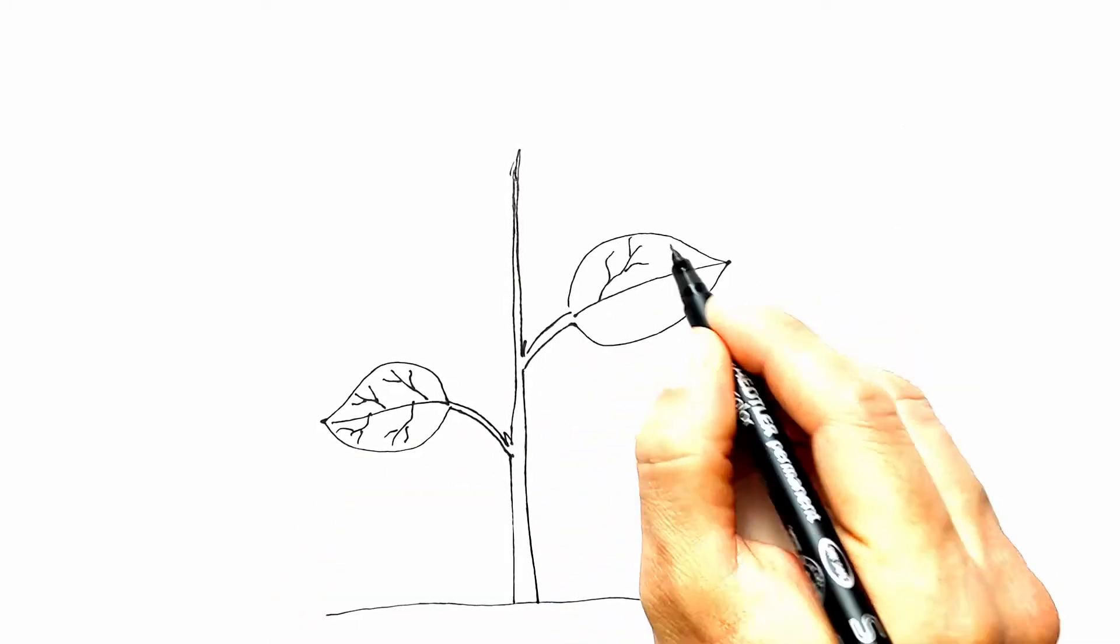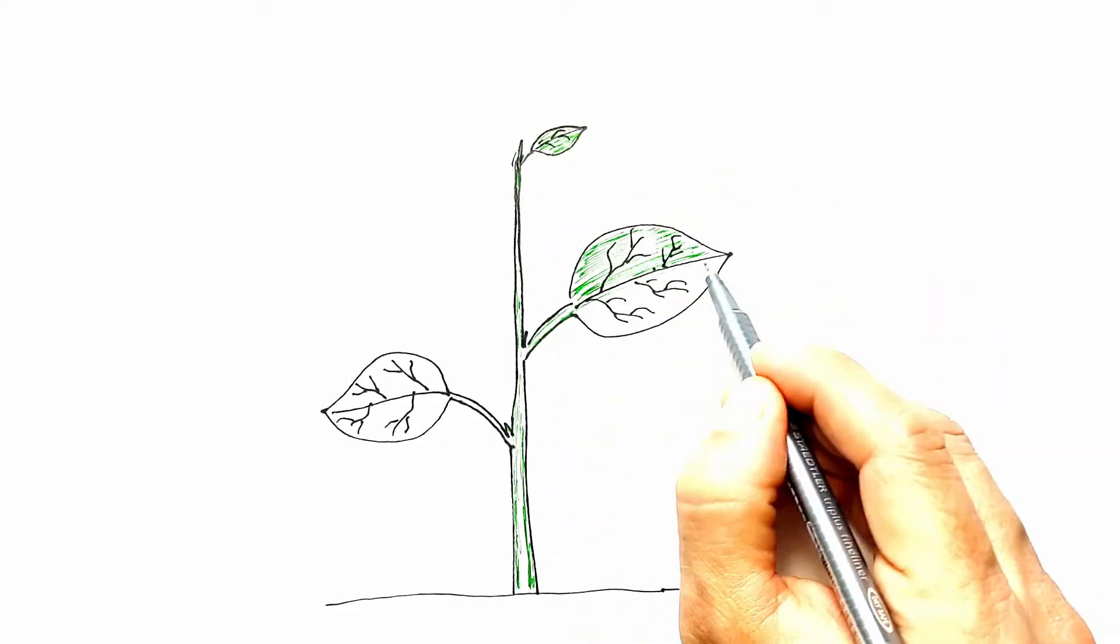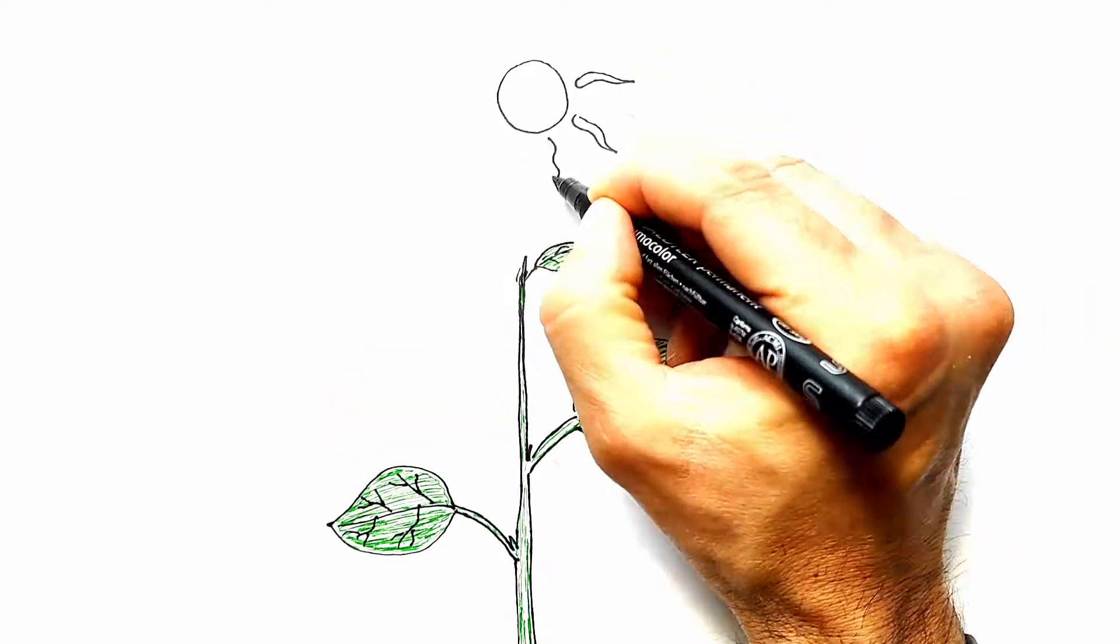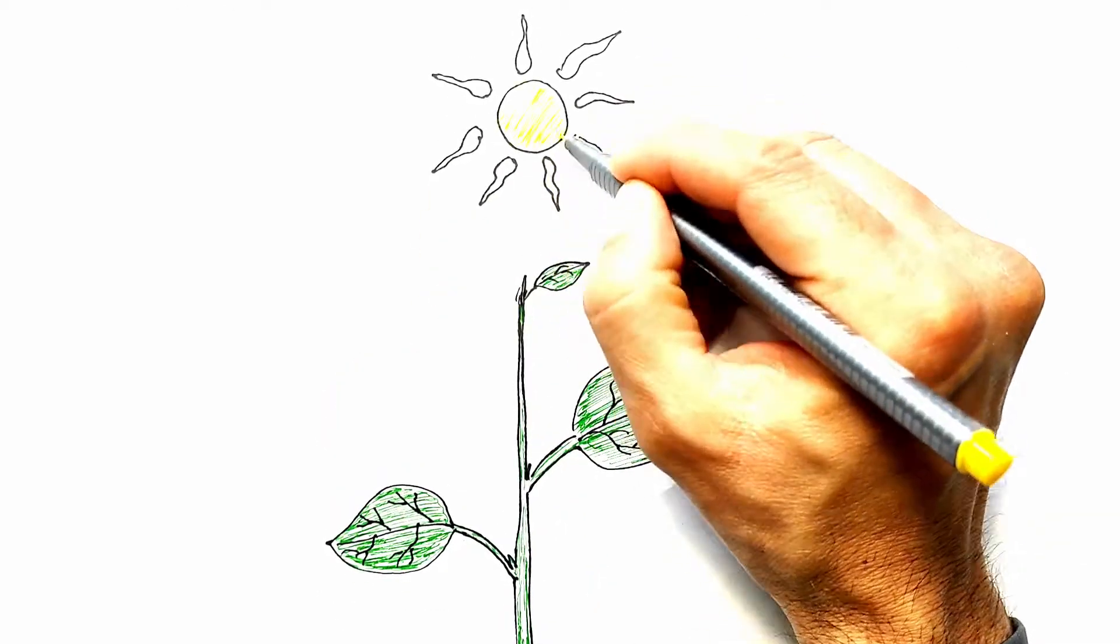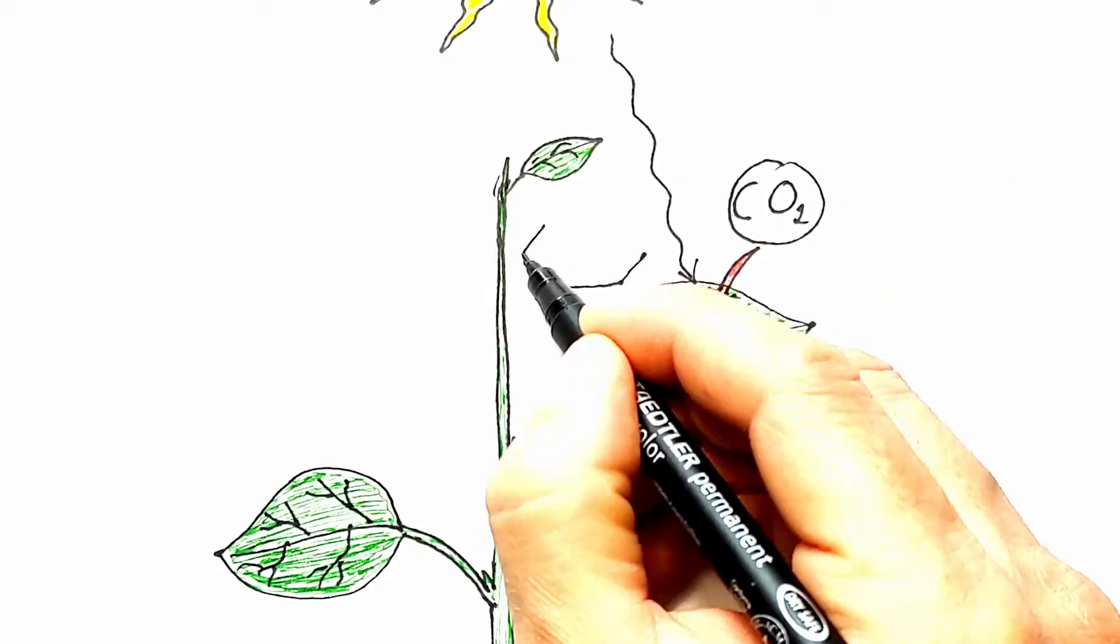Substances necessary for growth and development, plants take up from air and soil. The leaves absorb carbon dioxide from the atmosphere and incorporate it through photosynthesis into organic compounds, which make up about 96% of the plant's dry weight.